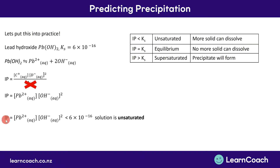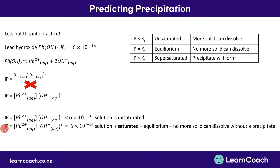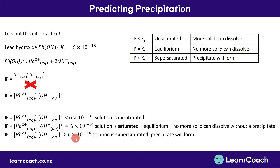There are three situations. If the IP we calculate is less than Ks (6×10⁻¹⁶), the solution is unsaturated. If IP equals Ks, the solution is saturated — no precipitate, but no more solid will dissolve. If IP is greater than Ks, we've completely saturated the solution and there's solid left over — it cannot dissolve, so it forms a precipitate.